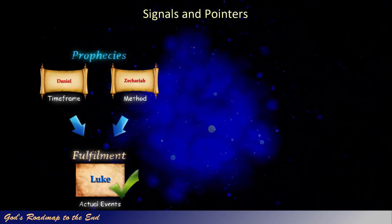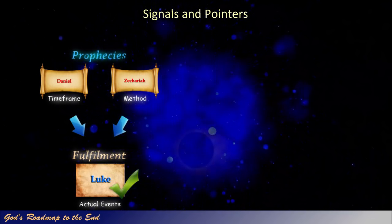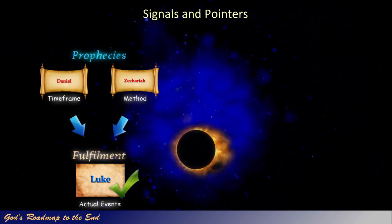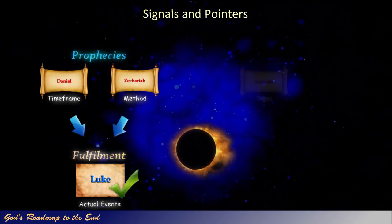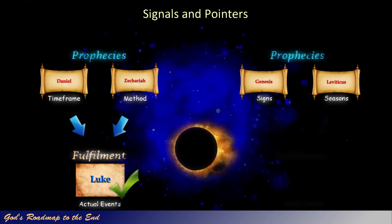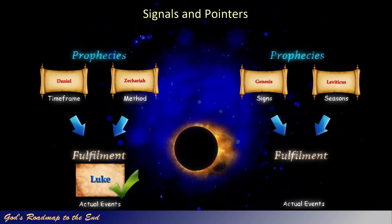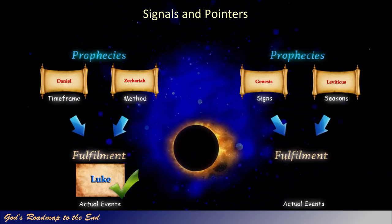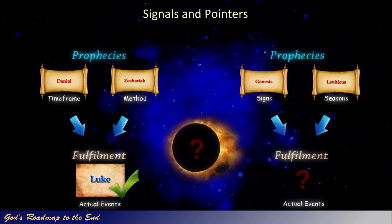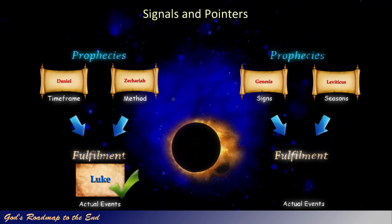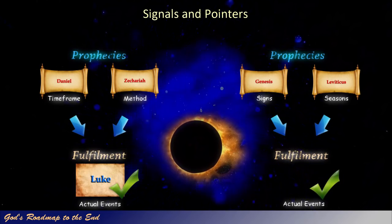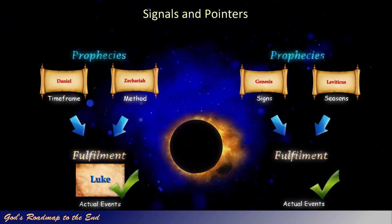If God's word is truly reliable, we would also expect to see God providing a heavenly signal to mark the fulfillment of his appointed times, as prophesied in Genesis 1 verse 14 and Leviticus 23. So can we find any evidence for such a celestial signal? How exactly did God mark these appointed times that were fulfilled by Israel's Messiah? It is truly amazing to discover that God did indeed mark the spring season of feast days with a very unusual celestial event.